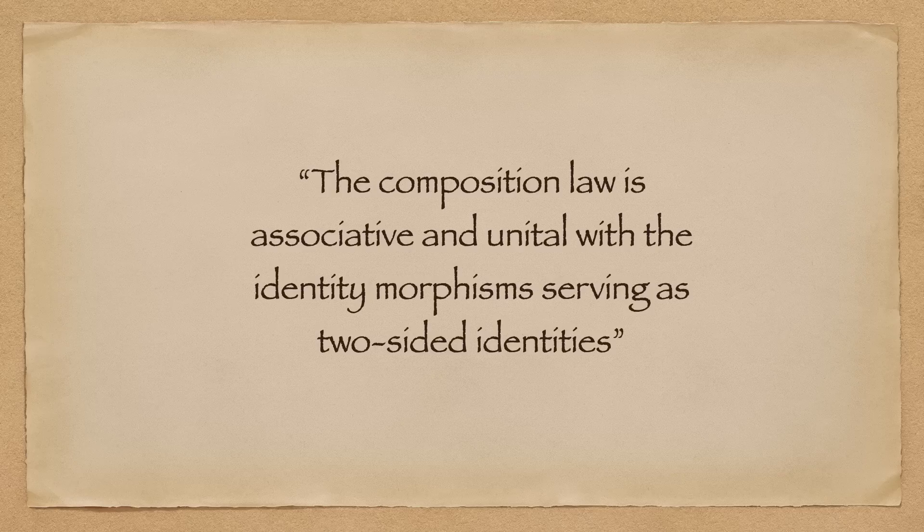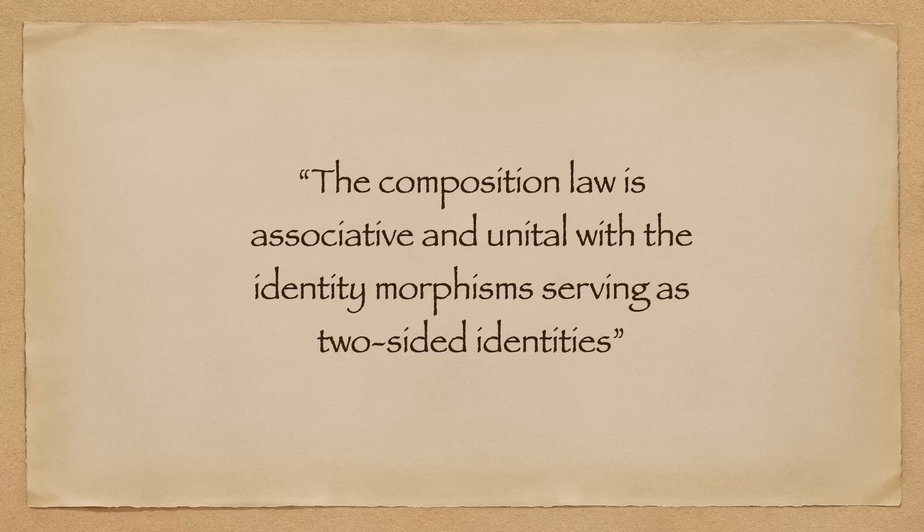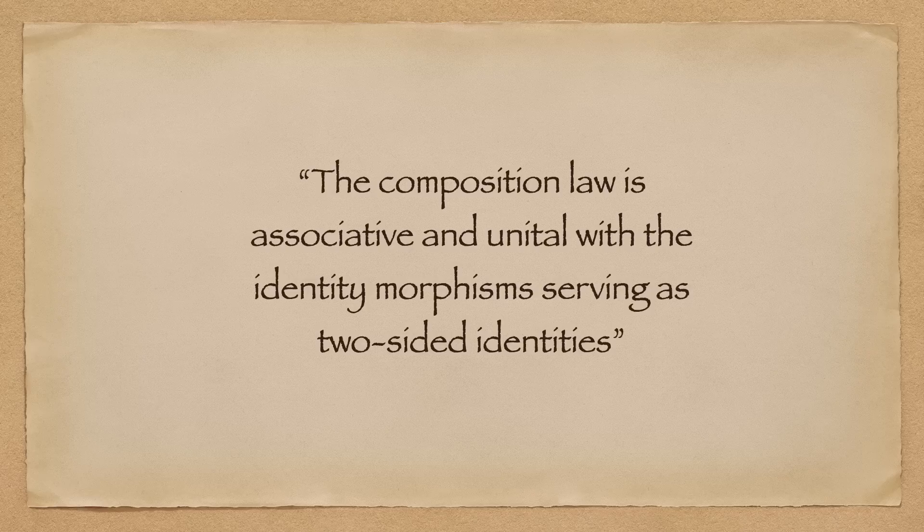It is precisely these morphisms that serve as the defining characteristic of category theory. As defined here, morphisms tell us the relationships between the objects in a category. A special morphism is called an isomorphism, which is exactly what you think it is.